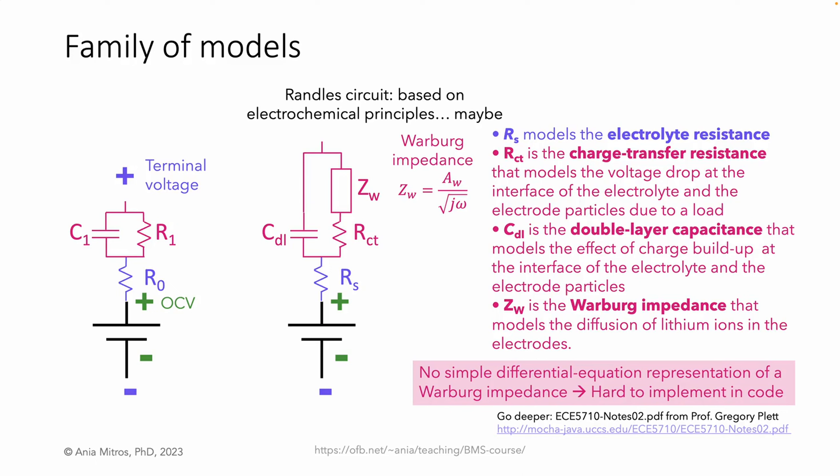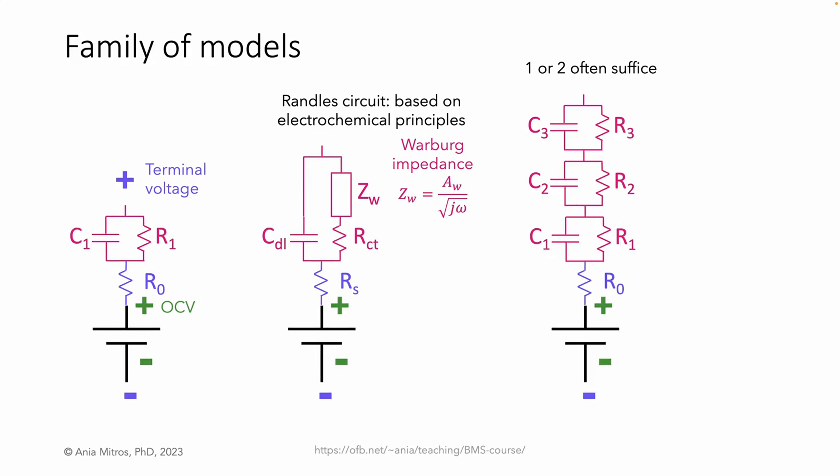I won't be quizzing you on the details of the Randles circuit, but I would like you to glimpse the math and rigor possible with cell modeling. A computationally simpler model includes a stack of parallel RCs. While infinitely many RC pairs would be required to exactly equal the Warburg impedance, in practice a small number is good enough — one or two RCs often suffice for production systems.